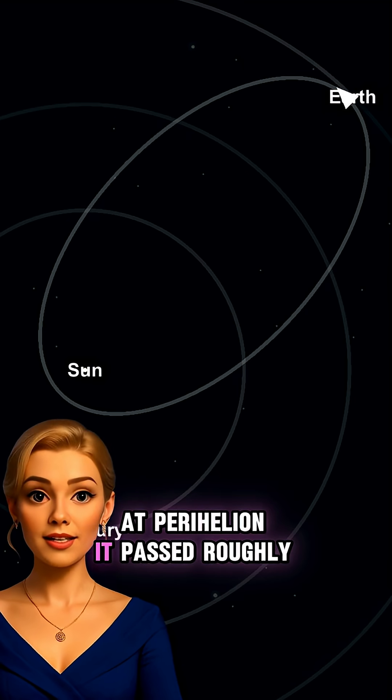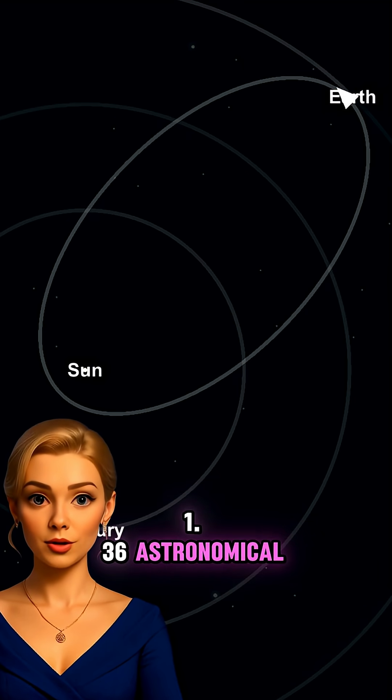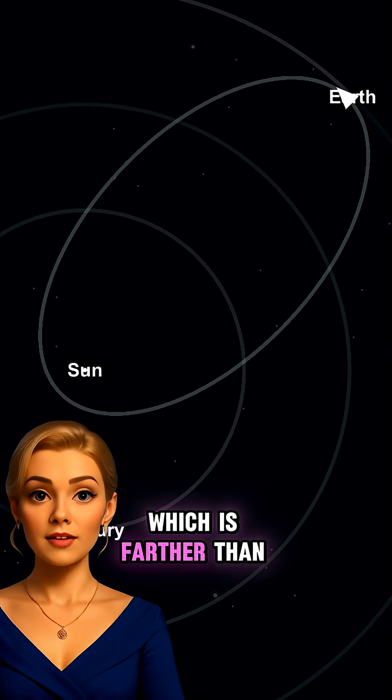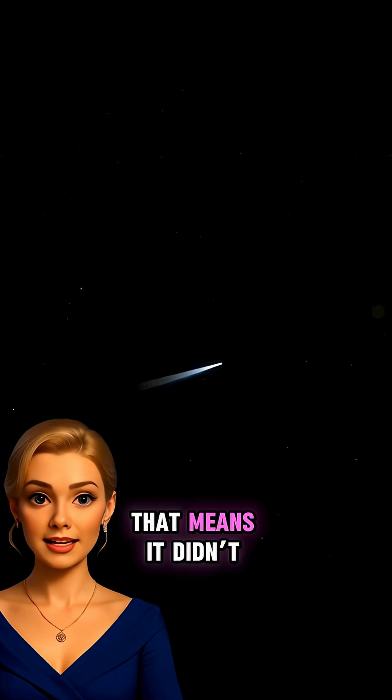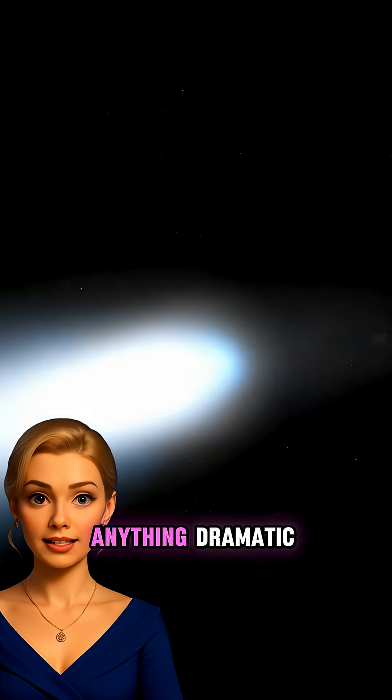At perihelion, it passed roughly 1.36 astronomical units from the Sun, which is farther than Earth's orbit. That means it didn't skim the solar surface or do anything dramatic.